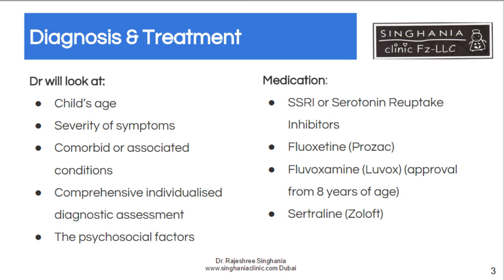Complete diagnosis is important before we start treatment. When we are looking at the child, we not only look at the child's age, birth history, and family history, but also the extent and severity of symptoms — what are the obsessions, what are the compulsions, and how significantly they affect academic or school life, social life, and day-to-day living. We also need to look at co-morbid conditions like ADHD, bipolar, tics, and Tourette's.